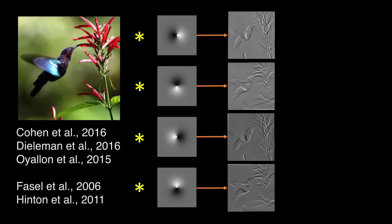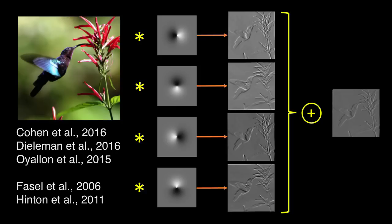Others have tackled the problem by averaging predictions over multiple rotated copies of the input, but again this is only discrete and loses all local rotation information.